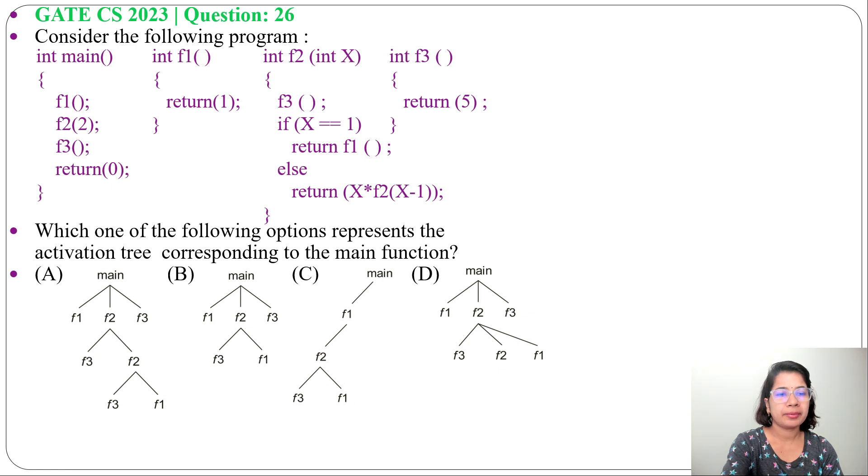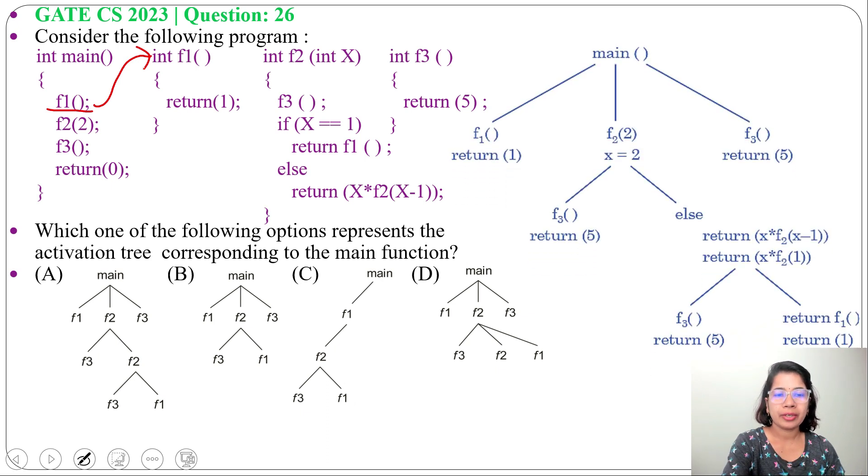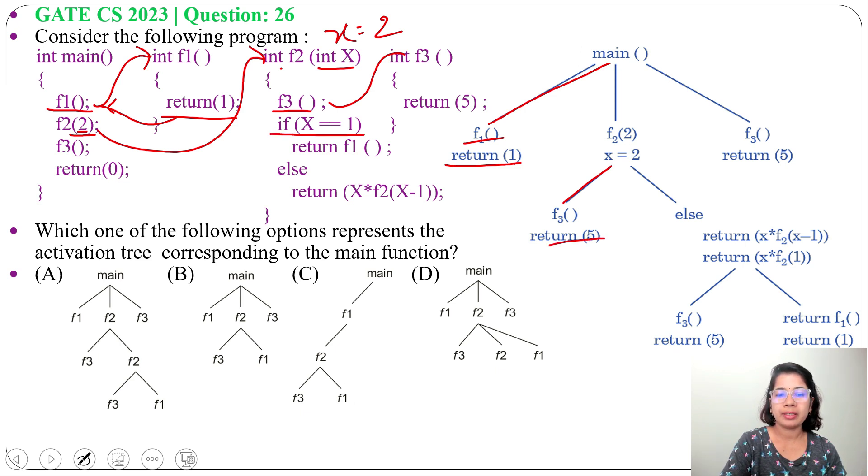Execution will start from main. First F1, so here we will call F1 function and now it will return 1. So from main we will call F1, F1 will return 1. We will come back to main, then we will call F2. And we are passing 2, means X value is 2. Now inside F2 function we will call F3. So from F2 we are calling F3. Then if X equals to 1, return F1.